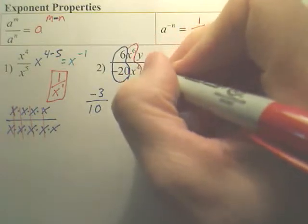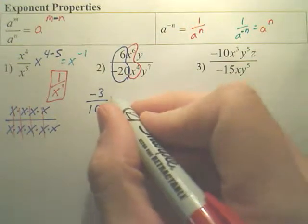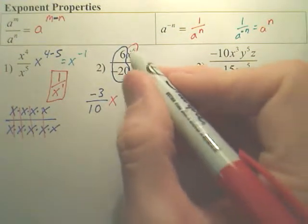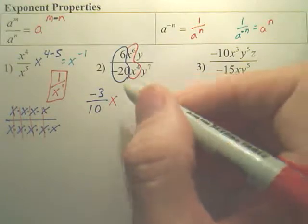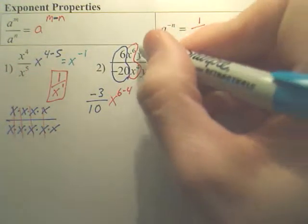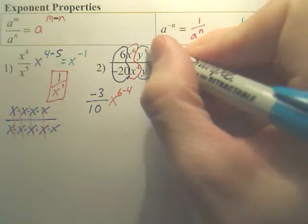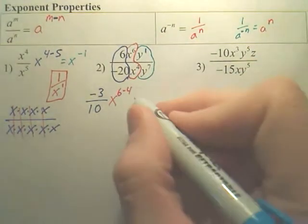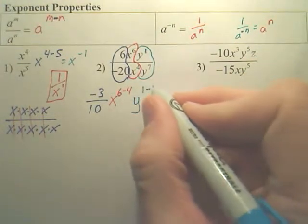Next, look at these x's. We're going to go x to the, do we add, subtract, multiply the powers? We subtract them according to the property we were just doing. And the last piece, isn't that a 1 right there? So this is going to be y to the 1 minus 7.